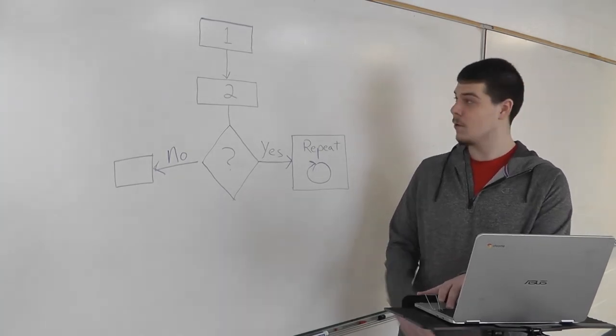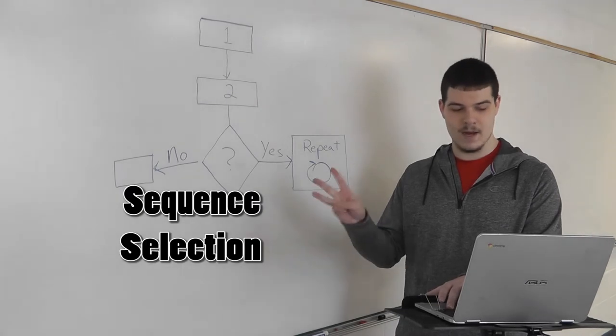Algorithms have three main characteristics, or building blocks: sequence, selection, and iteration.